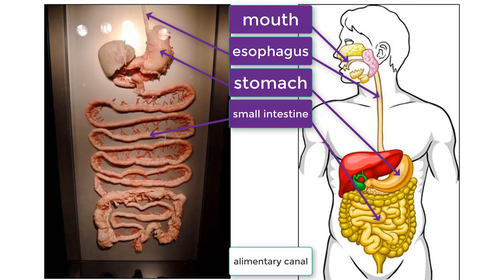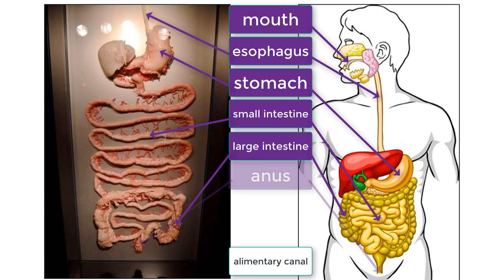The main function of the small intestine is to absorb nutrients. After the small intestine, remaining contents get pushed to the large intestine where water and dissolved minerals are absorbed. Any remaining waste is collected and exits through the anus.